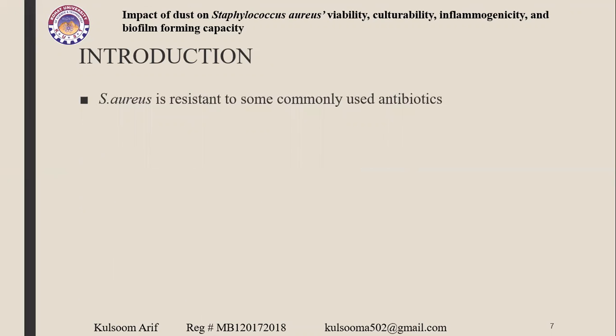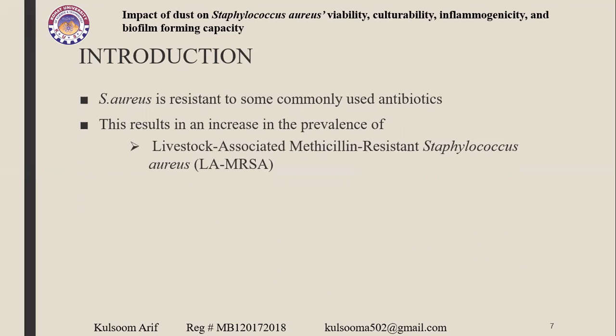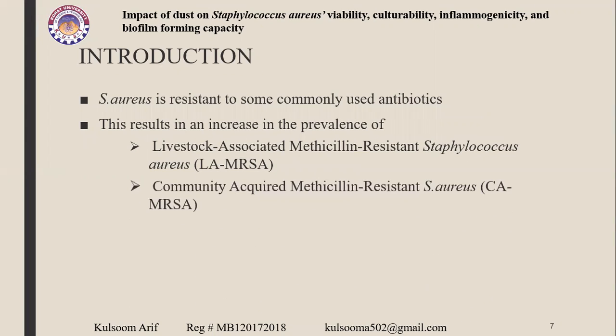Staphylococcus aureus is resistant to commonly used antibiotics like penicillin, methicillin, and antibiotics associated with the beta-lactam ring. Due to this resistance, there is an increasing prevalence of livestock-associated methicillin-resistant Staphylococcus aureus, abbreviated as LA-MRSA, and community-acquired methicillin-resistant Staphylococcus aureus, abbreviated as CA-MRSA. Both pose a potential occupational health issue in Denmark, which is our study area.